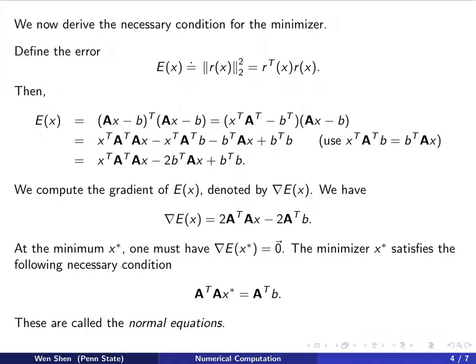So at the minimum x star, we must have a 0 for the gradient vector, otherwise it's not a minimum. So the minimizer x star must satisfy the following so-called necessary condition. That is, this has to be 0, which means A^T A x star equals A^T b.